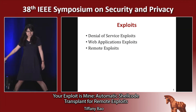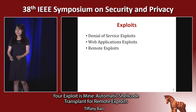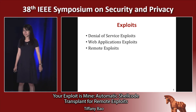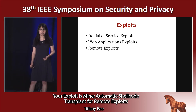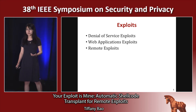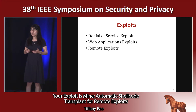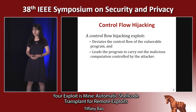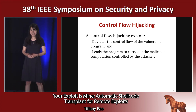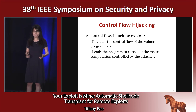Let's start. There are many different kinds of exploits — denial of service exploits, web application exploits, and remote exploits. In our talk, we are going to focus on a particular kind of remote exploits, which is also one of the most dangerous exploits. We call it control flow hijacking exploit. A control flow hijacking exploit is an input that deviates the control flow of the program and leads the program to carry out malicious computation controlled by the attacker.